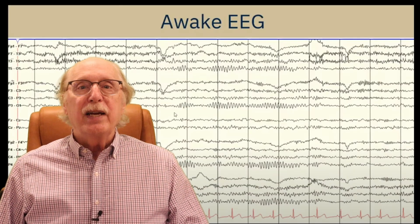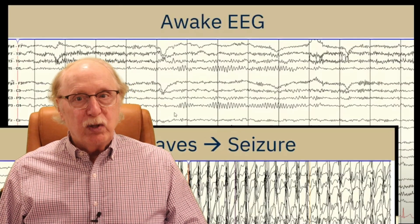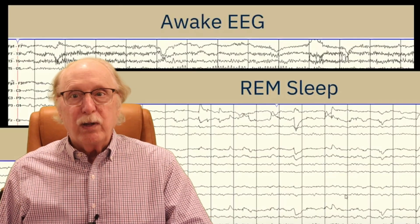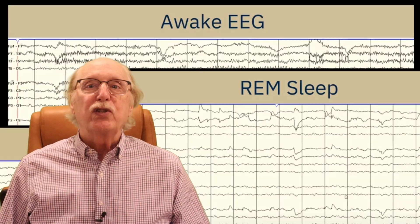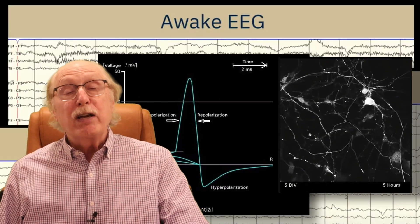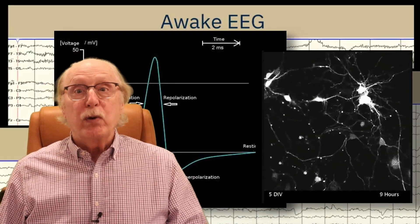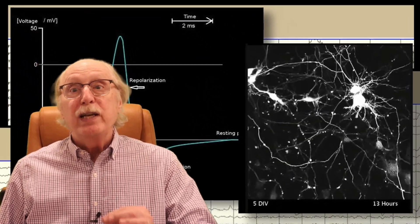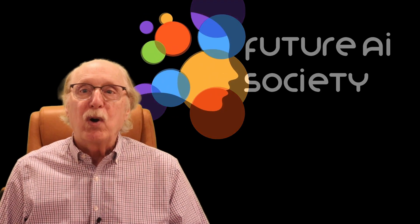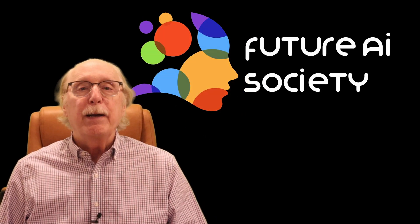I'm Charles Simon, long-time AI researcher, software developer, and manager. Beyond AI, I've developed software for neurological test instruments and neural simulators. I created the Future AI Society to explore how neuroscience can inform smarter, more human-like AI.